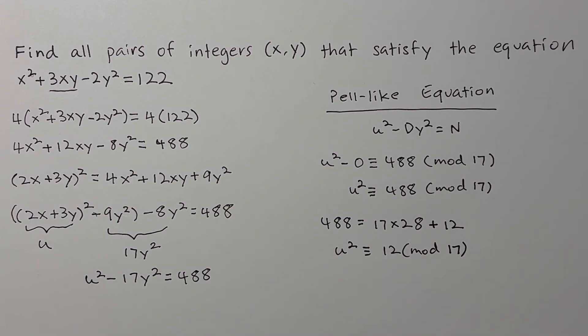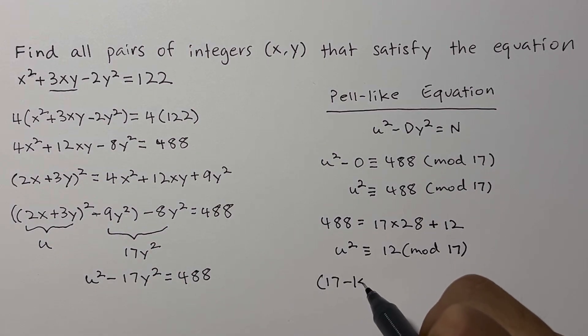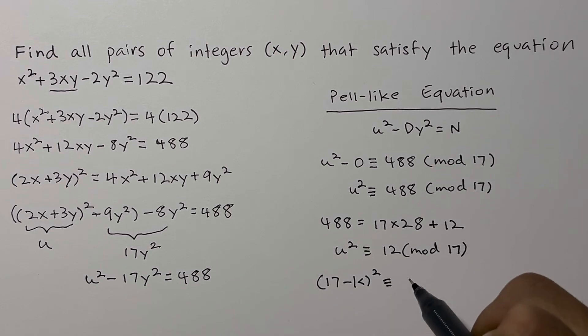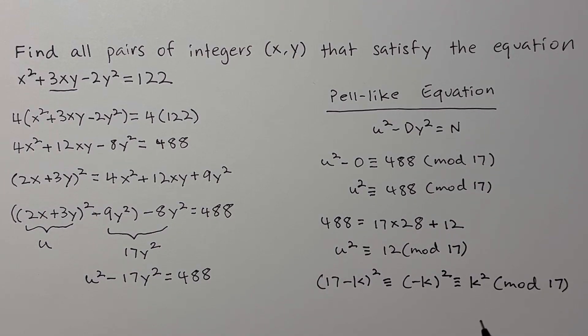Now, the problem boils down to one question. Can you find an integer u whose square gives a remainder of 12 when divided by 17? In number theory, we are asking if 12 is a quadratic residue modulo 17. So, let's just list all the possible remainders of perfect squares modulo 17. We only need to check the numbers from 0 to 8 since 17 - k squared is congruent to negative k squared, congruent to k squared (mod 17).